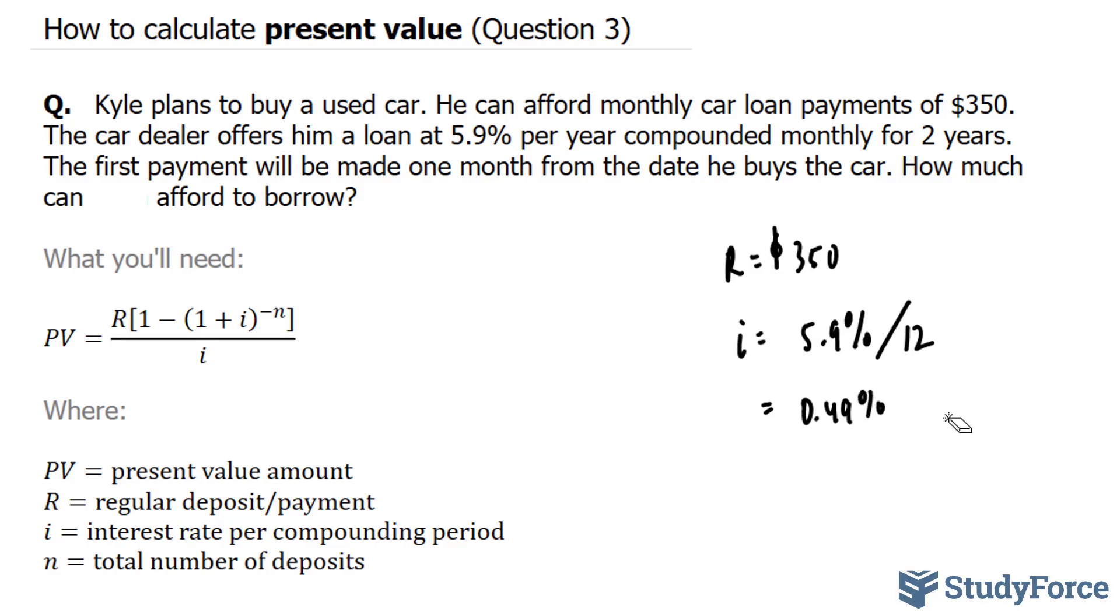Now we don't like to use percentages when working with these types of problems. Instead, we use the decimal version. So to find the decimal version of this number, we divide by 100, and that gives us 0.0049. So that is going to represent your i value.